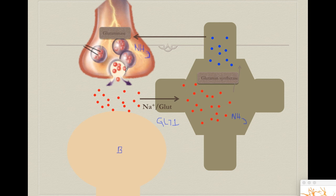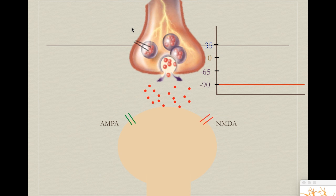This allows recycling of up to 60% of all the nitrogen that our neurons use to produce this neurotransmitter. This is very important because since glutamate is responsible for up to 50% of all synapses in the brain, it would consume a lot of energy and nitrogen if it were not recycled.